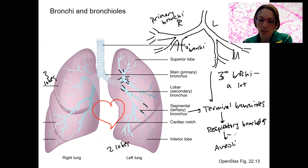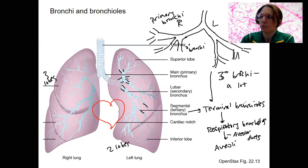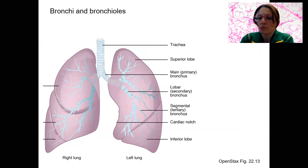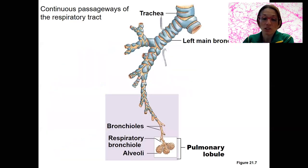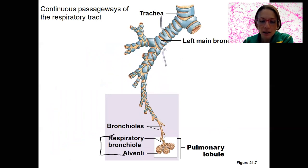Alveolar ducts open up to the alveoli. You've seen this picture before — here's the same thing. These are the respiratory bronchioles and alveoli, and this right here would be an alveolar duct.